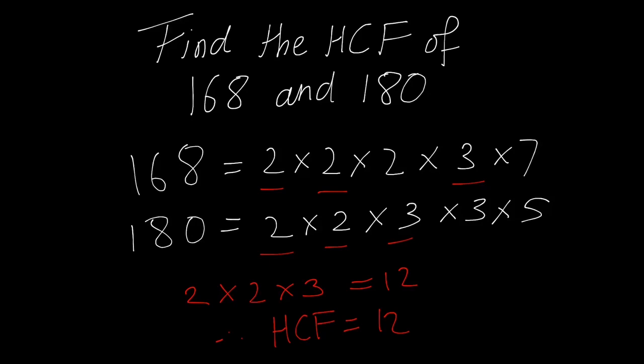Now, in this example we need to find what is common to both. We need the same number appearing in both lists. We've got two 2s here and two 2s here, one 3 here and one 3 here. We just need to multiply those common numbers — not two lots of them, but exactly what is common to both. So 2 times 2 times 3 is 12. Therefore, the highest common factor is 12. You can see how useful prime numbers are.